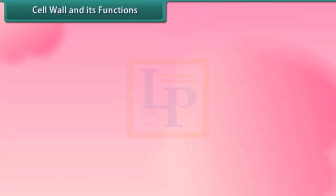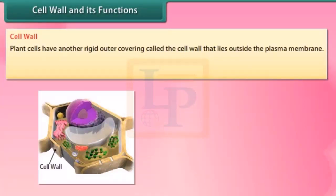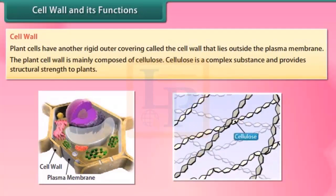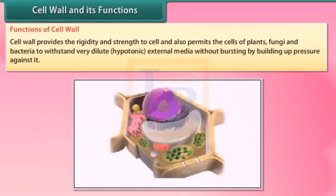Cell wall and its functions: plant cells have another rigid outer covering called the cell wall that lies outside the plasma membrane. The plant cell wall is mainly composed of cellulose, which is a complex substance and provides structural strength to plants. The cell wall provides rigidity and strength to the cell, and also permits the cells of plants, fungi and bacteria to withstand very dilute (hypotonic) external media without bursting, by building up pressure against it.